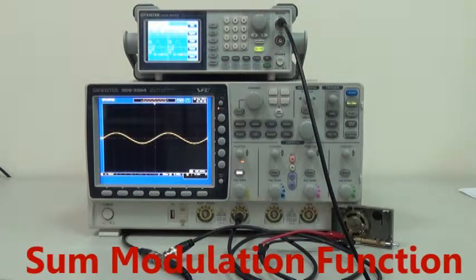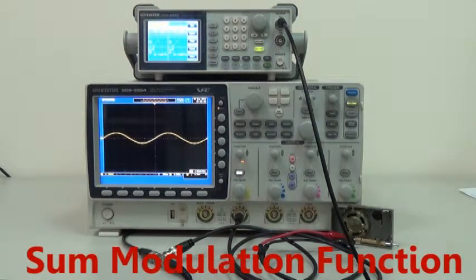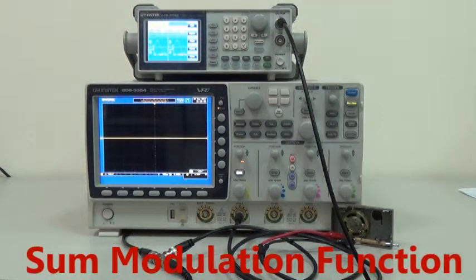1 kHz and 3V peak-to-peak sine wave signal is shown on the screen, and you can see and hear the 1 kHz sine wave signal from the oscilloscope and speaker. Press output key to turn off signal output.